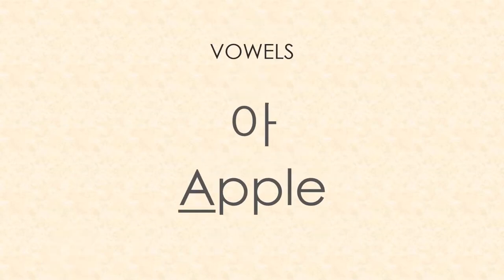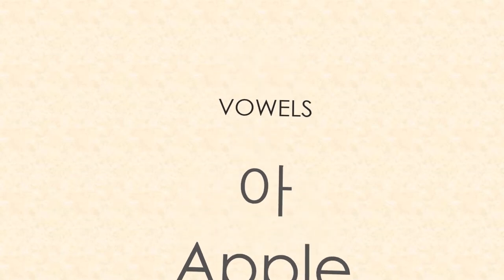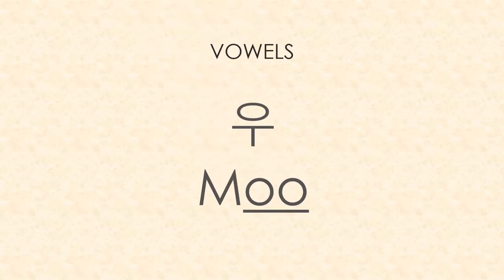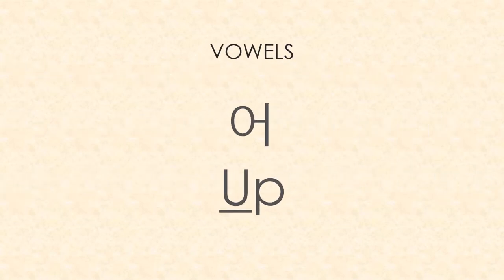Now we're going to talk about some vowels. Our first one is very simple — it's just an A sound, A for apple. Secondly we have the U sound — everybody knows a cow goes 'moo,' and it's exactly the same U as in moo. This U sound is also pronounced the same as in 'up' — you need to open your mouth wide, tense your throat, and pronounce it from the bottom of your throat. Many people in English will confuse this for A, but they are slightly different.